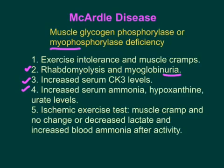The ischemic exercise test is a screening test for McArdle disease. A blood pressure cuff is tied and inflated to 60 mmHg, a basal blood sample is taken for lactate and blood ammonia, then the patient squeezes a rubber ball until muscle cramps occur. A post-activity sample shows no change or decrease in lactate — because the Cori cycle removes lactate and glycolysis is not occurring — and increased blood ammonia, indicating a positive test.